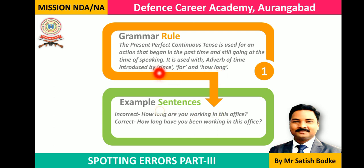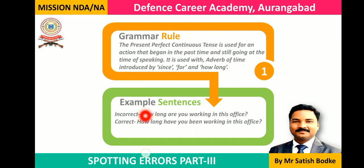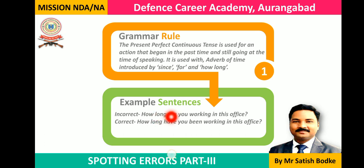Whenever we use the words since, for, how long, it suggests we are talking about a present perfect continuous action. In this case, we should always use present perfect continuous tense — have been plus the ing form of the verb, or has been plus the ing form. For example, the incorrect sentence is: 'How long are you working in this office?' — 'are working' is present continuous tense, which is incorrect here. The correct sentence is: 'How long have you been working in this office?' because 'how long' indicates an action that started in the past and is still continuing. So this is rule number one.